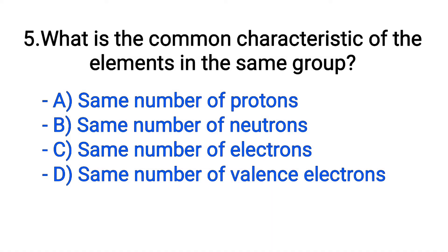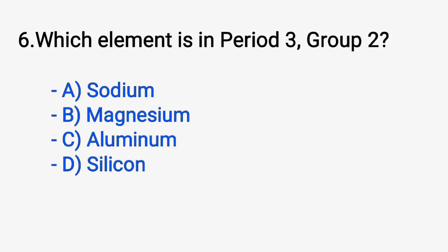Question number 5. What is the common characteristic of the elements in the same group? Option A: Same number of protons. B: Same number of neutrons. C: Same number of electrons. D: Same number of valence electrons. The correct answer is option D, same number of valence electrons.